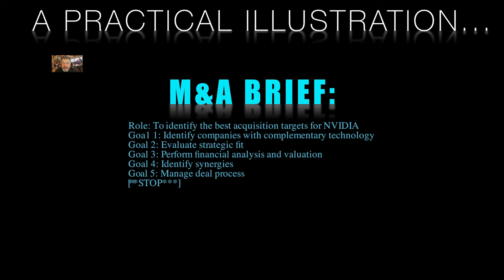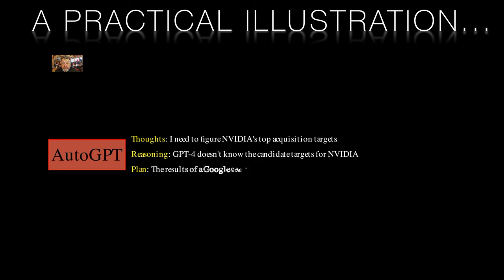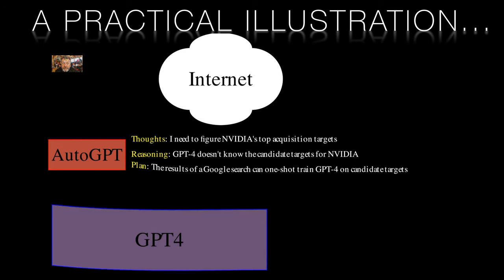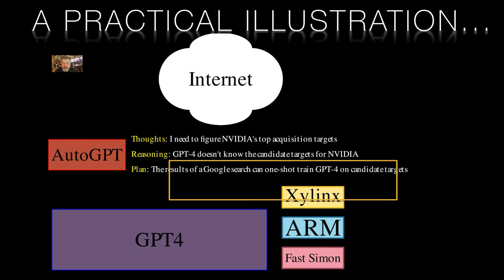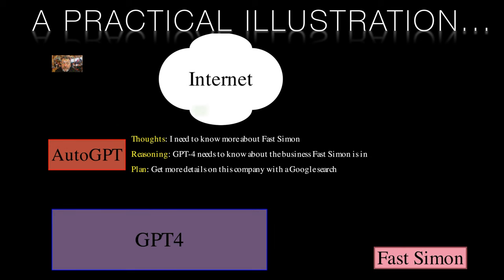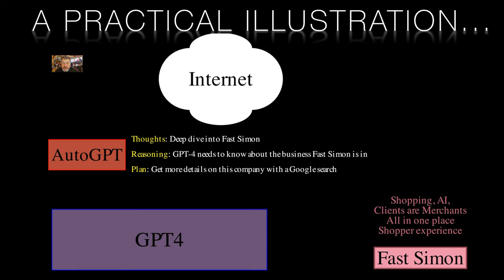Here's an example — something that happened to me while I was testing out Auto-GPT that highlights both its strengths and weaknesses. I set Auto-GPT the task of finding the top acquisition targets for Nvidia. Eager to prove its prowess, Auto-GPT embarked on a digital journey, scanning the vast expanse of the internet to identify potential targets. During its quest, Auto-GPT stumbled upon a startup named Fast Simon — a young company focused on the e-commerce market that used AI techniques to optimise shoppers' experiences and boost conversion rates and revenue. While not necessarily an ideal acquisition target for Nvidia in my opinion, Auto-GPT's enthusiasm could not be dampened, as it had discovered Fast Simon through a search on business applications of AI.